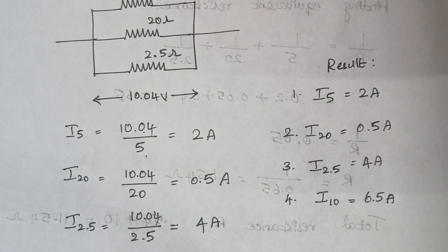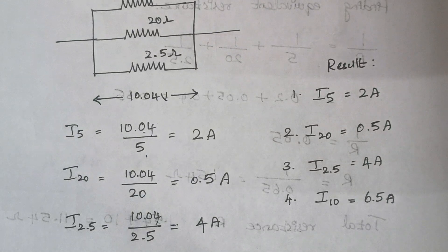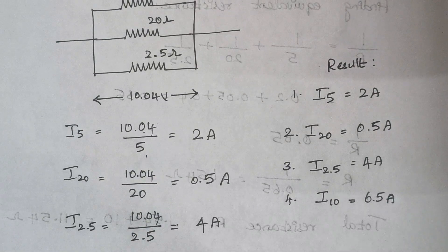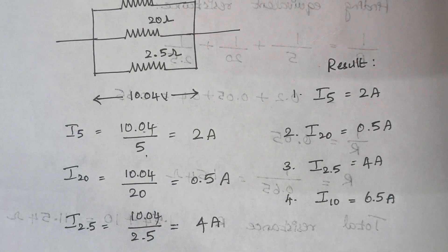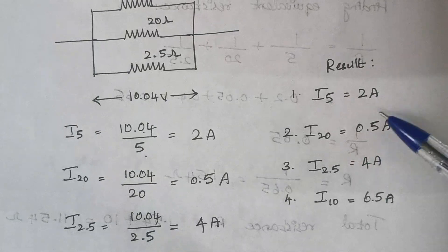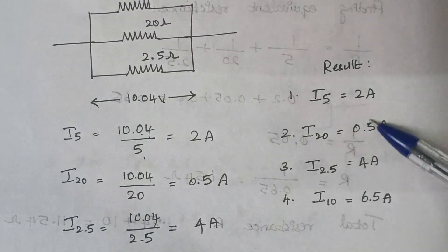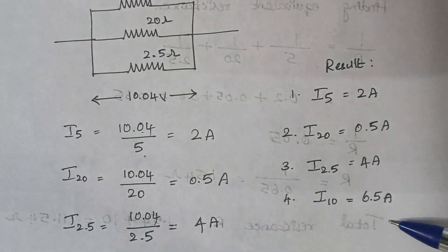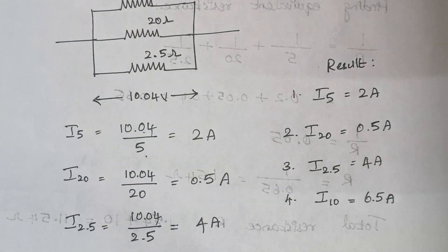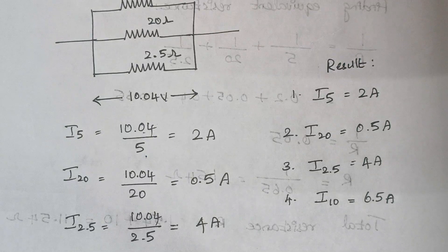So finally, we had calculated the value of voltage across the terminal A-B and the current flowing through each resistor. So, this is our result. Here the problem gets over and we will proceed with the next problem.